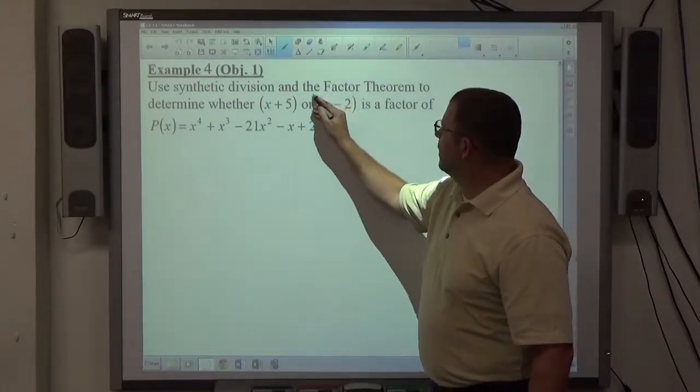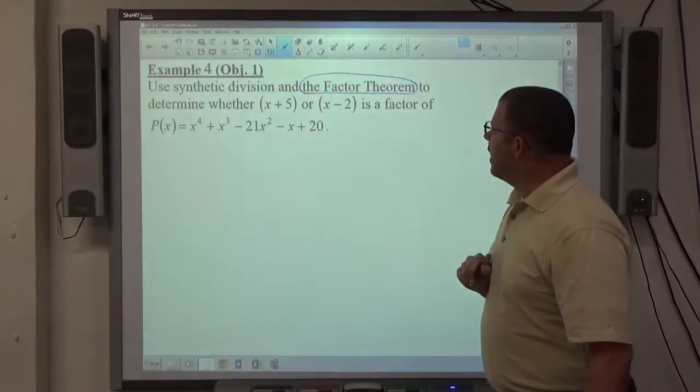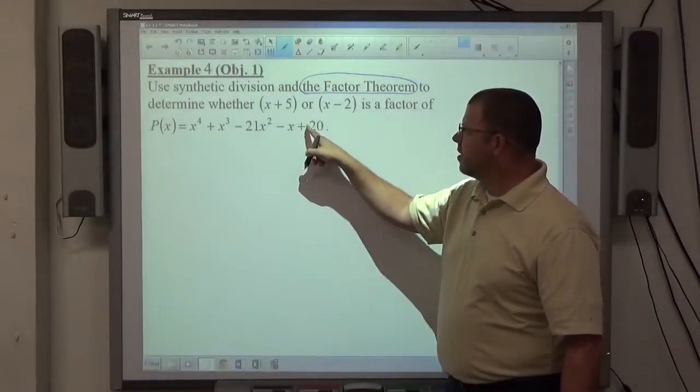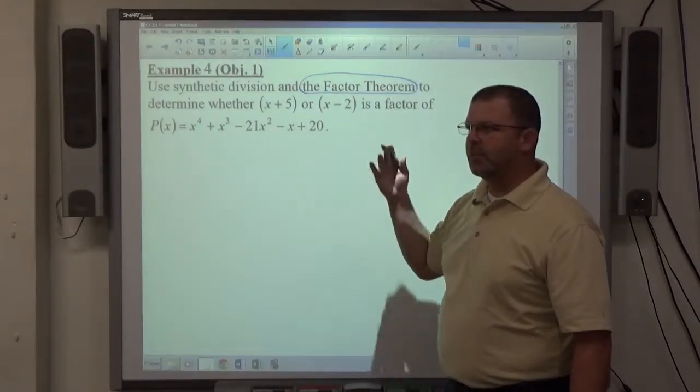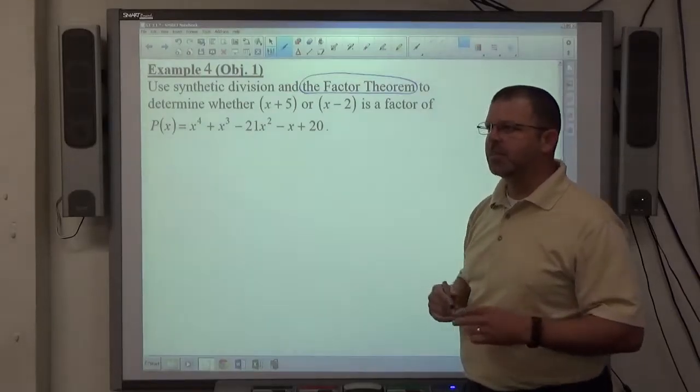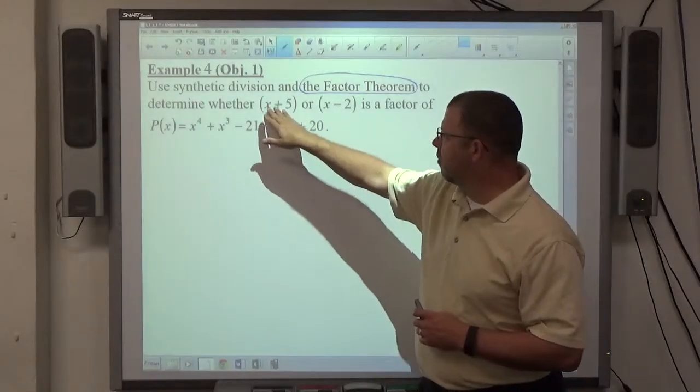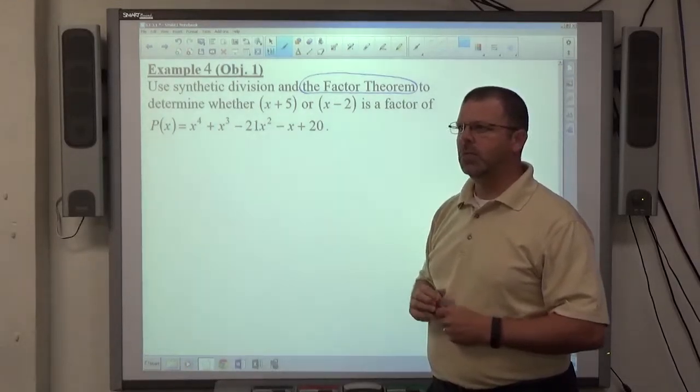The Factor Theorem, just to give you the simple version of it, is if a polynomial is divided by a binomial and the remainder is 0, then the binomial is a factor of the polynomial. That's basically what it says. So if you divide the polynomial by the binomial and you get a remainder of 0, you have a factor.